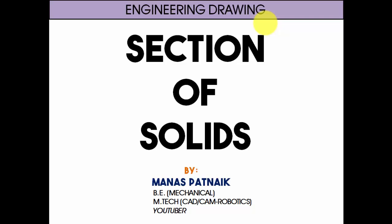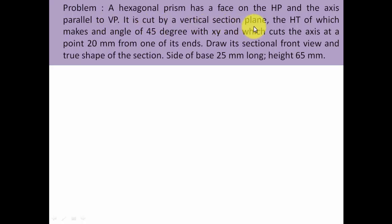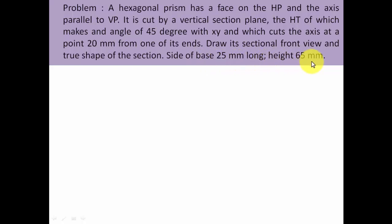Hi there guys, this is your friend and tutor Manas. In this video I'm going to show you how the sectioning of a hexagonal prism can be carried out when one of its rectangular faces is in absolute contact with the horizontal plane, or when one of its rectangular faces is on the ground. A hexagonal prism has a face on the HP and the axis is parallel to VP. It is cut by a vertical section plane, that is an auxiliary vertical plane (AVP). The HT of it makes an angle of 45 degrees with the XY line and cuts the axis at a point 20 mm from one of its ends. Draw its sectional front view and true shape of the section. Side of the base is 25 mm long and height is 65 mm.